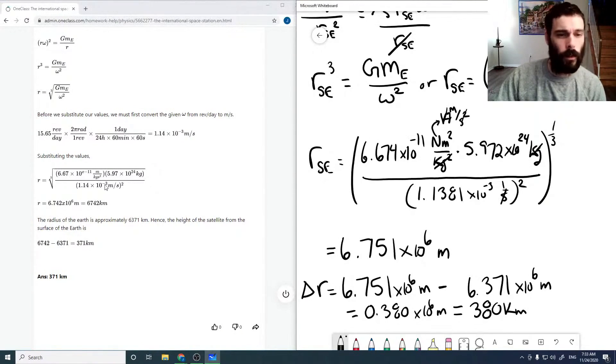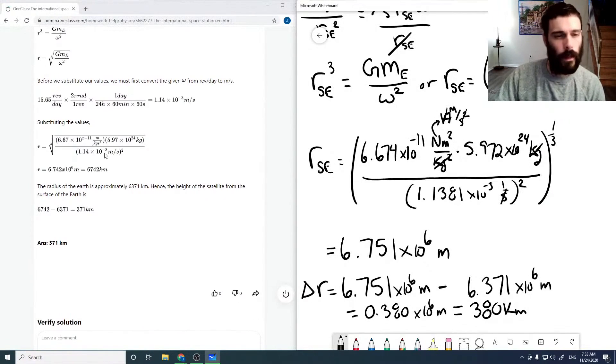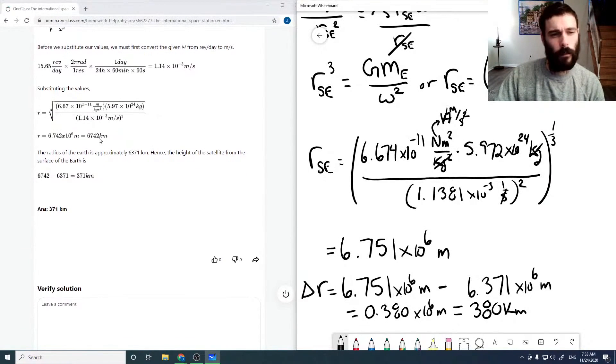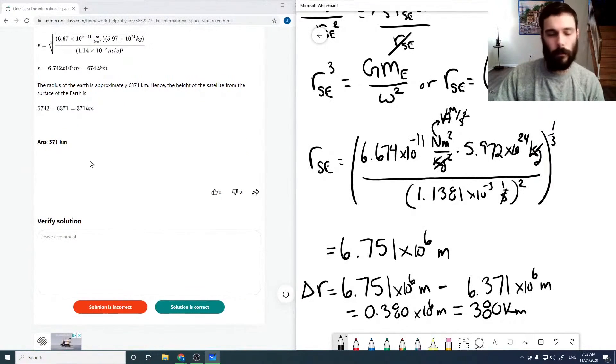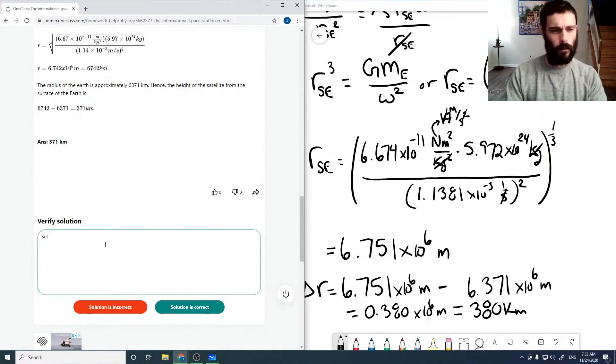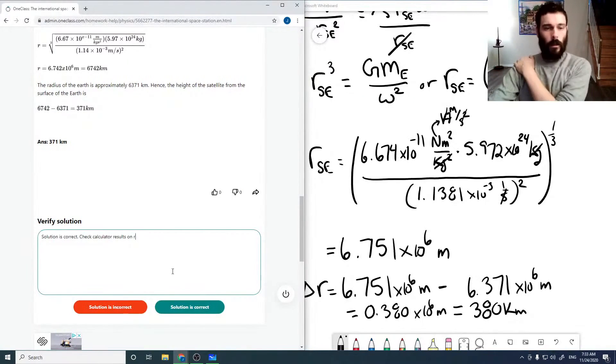And also, the units here on the gravitational constant are a little funny, but again, largely fine. The number that comes out is different from what I computed. So I don't know where that value comes from, but I would say the solution is correct. Check calculator results on r. So I'll say it's correct. Just, I'm a little curious where some of the values come out at, but fine.